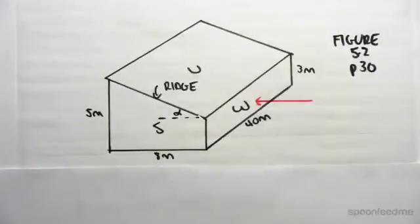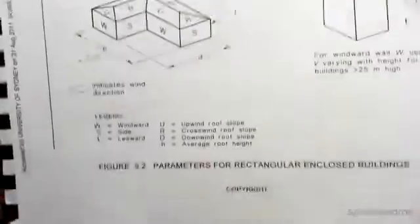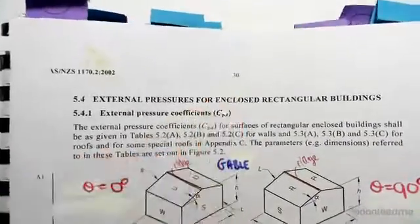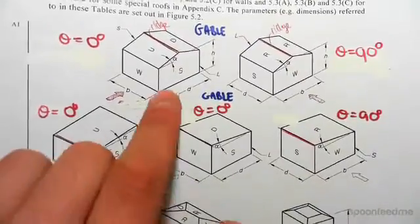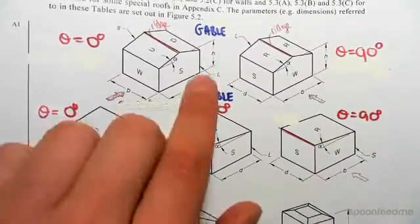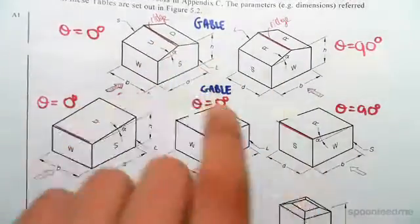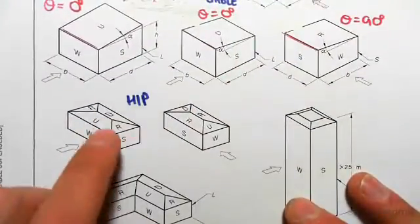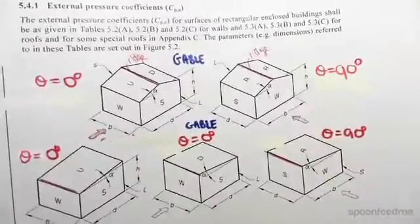We flip over a couple pages to this over here: 5.2 parameters for rectangular enclosed buildings. This is on page 30. Now I've drawn in my standard, I recommend you do this too. We need to understand what a gable and hip roof is. A gable roof is like these roofs here where you have two slants or just one slant. We classify those as gable roofs. A hip roof is when you have four different slants. These are hip roofs.